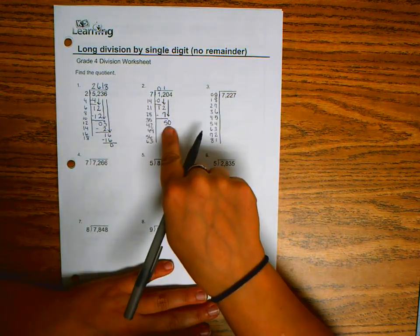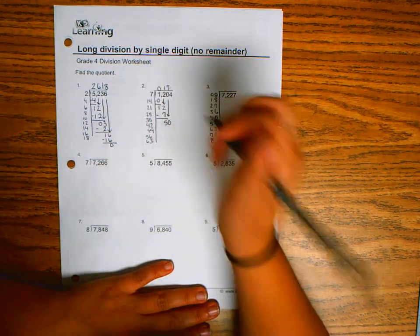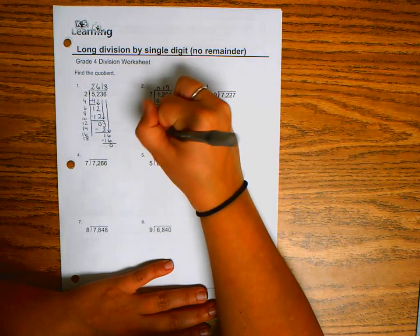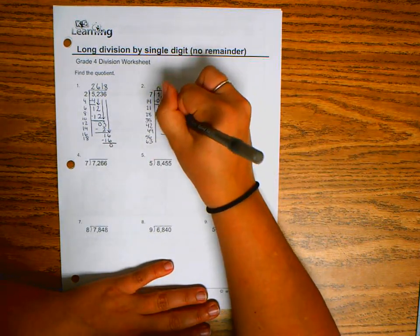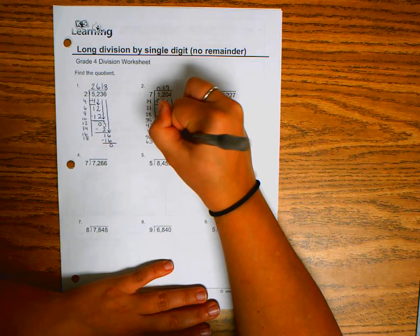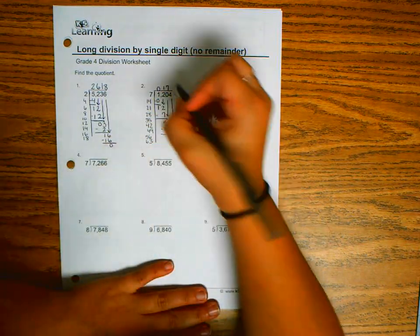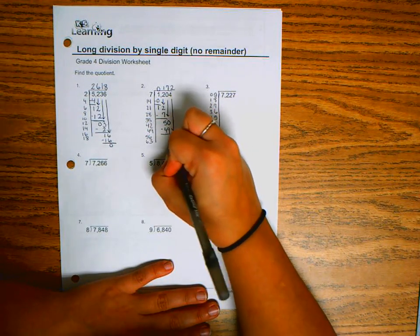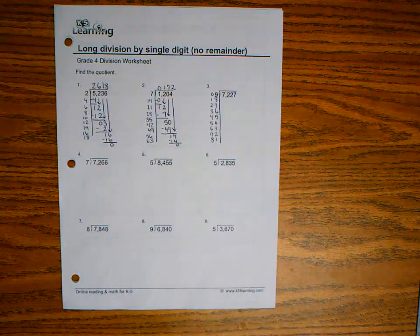Seven can go into fifty seven times, and seven times seven is forty-nine. Fifty minus forty-nine is one, and I bring down that last number which is four. Seven can go into fourteen two times, and two times seven is fourteen. Fourteen minus fourteen is zero.